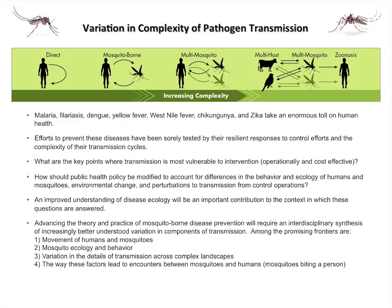Some areas I think are important to highlight are things like movement of humans and mosquitoes, mosquito ecology and behavior, and variation in the details of transmission across complex landscapes. We also need to understand how humans and mosquitoes come together, because the mosquito has to bite a person, take up a blood meal with a pathogen in it, go through an incubation period, then become infectious and bite another person to pass it on.